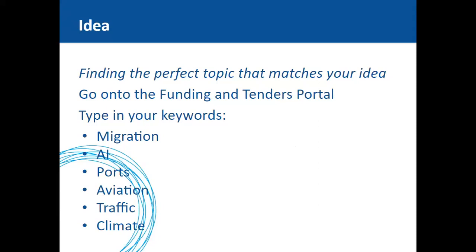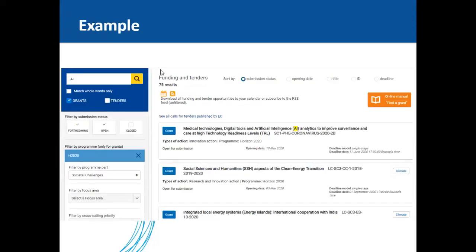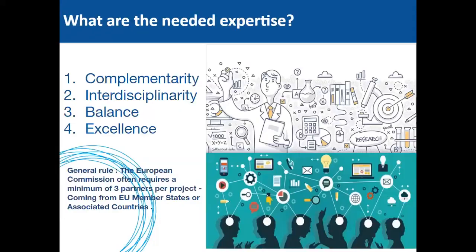Once you have an idea and have checked out the topic, you can start looking for partners and building your consortium. The first question is what expertise is needed. The general rule is that the European Commission requires a minimum of three partners from EU member states or associated countries. There are four key qualities to look for: complementarity, interdisciplinarity, balance, and excellence.